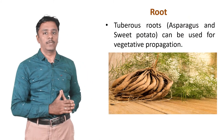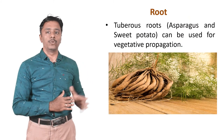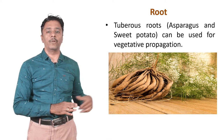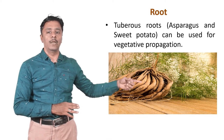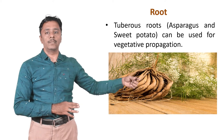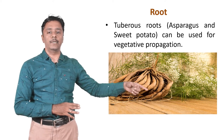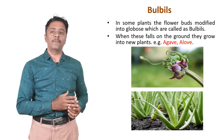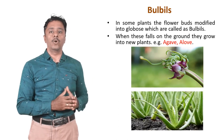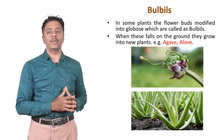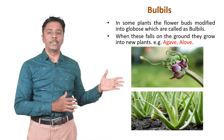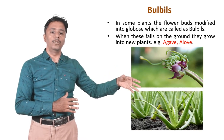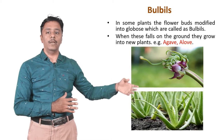The next one is root. Tuberous roots of asparagus and sweet potato can be used for vegetative reproduction. You can see that the sweet potato has some tuberous roots. The next one is bulbils. In some plants, the flower buds are modified into blobs called bulbils. When these fall on the ground, they grow into a new plant. Examples are agave and aloe.